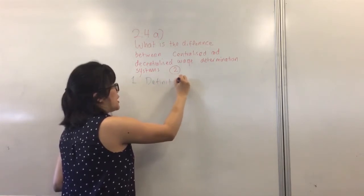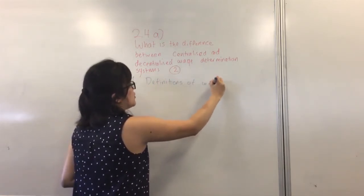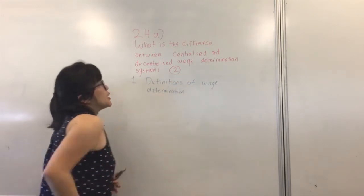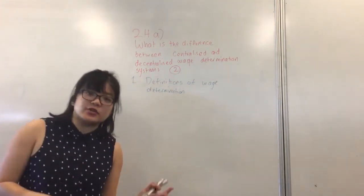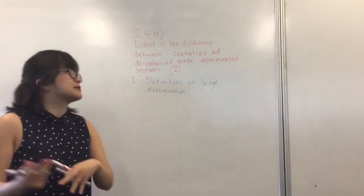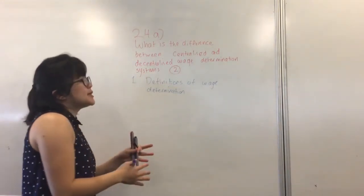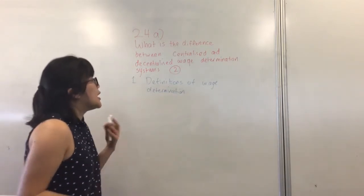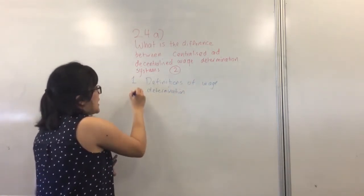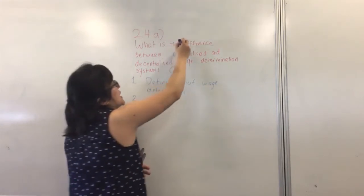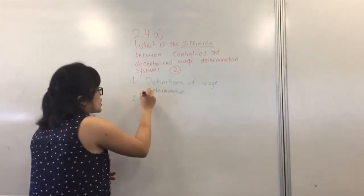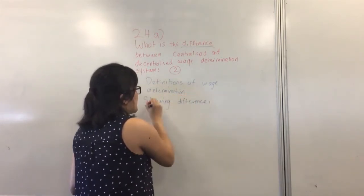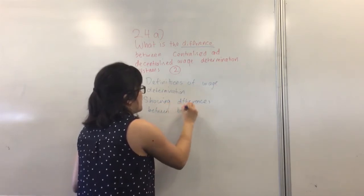So definitions of wage determination systems - you can say centralised wage determination system is this, decentralised is this, but that's only one of the two marks. The first one is obviously noting that they're two different things, so you could have a definition that has the different wage determinations. The second one is obviously showing that there is a difference, because it says what is the difference. So, showing differences between both systems.